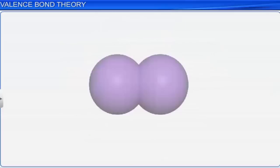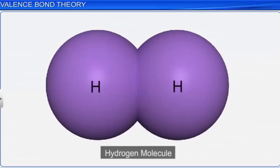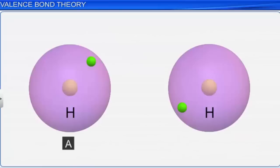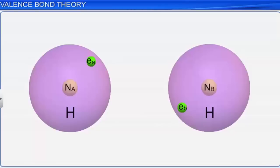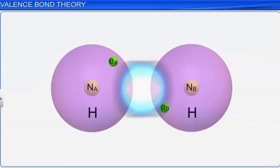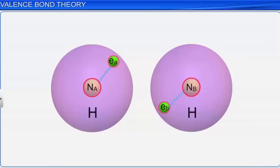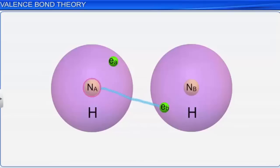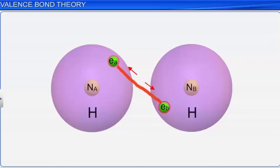Let's explain the formation of a hydrogen molecule based on this theory. Consider two hydrogen atoms A and B approaching each other, with nuclei Na and Nb and electrons Ea and Eb. As they come closer, forces of attraction arise between the nucleus of one atom and its own electron (Na–Ea, Nb–Eb) and between the nucleus of one atom and the electron of another (Na–Eb, Nb–Ea). Simultaneously, repulsive forces arise between the two electrons Ea and Eb, and the two nuclei Na and Nb.